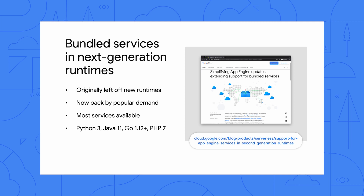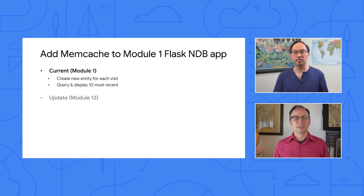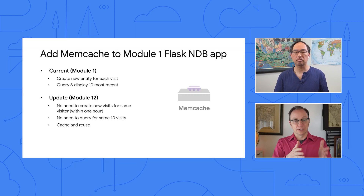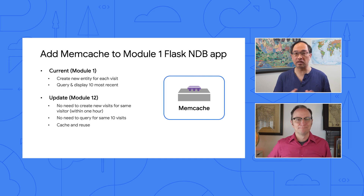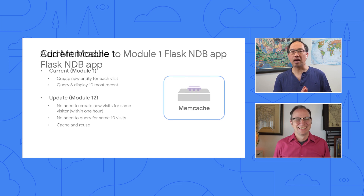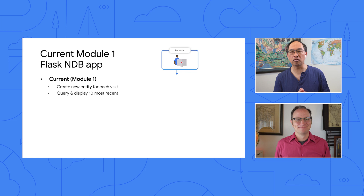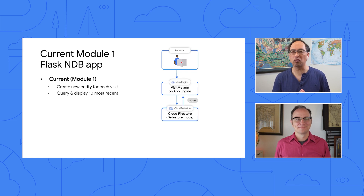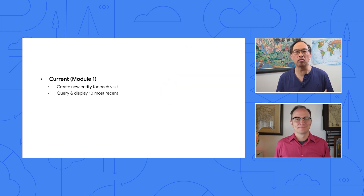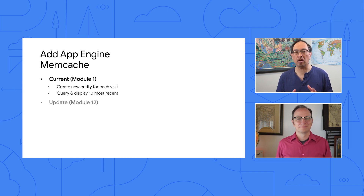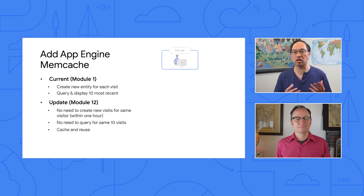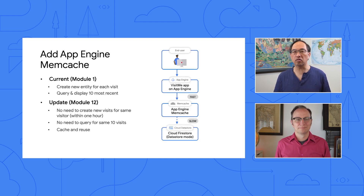Either way works. So what are we going to use Memcache for in our sample app? Our app creates a new entity for each page visit. Because it only shows the 10 most recent visitors, there's no need to create new visits if the same user keeps hitting our website. So we'll just cache the most recent visits for an hour for the same user. If a new user comes along, that will reset the cache. Also, the cache will expire after an hour.